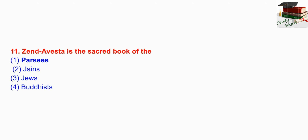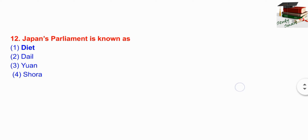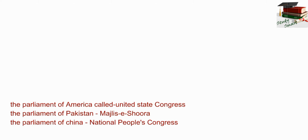Which among the following waves is used for communication by artificial satellites? The right answer is microwave. Next question: Zend Avesta is the book of the Parsis.